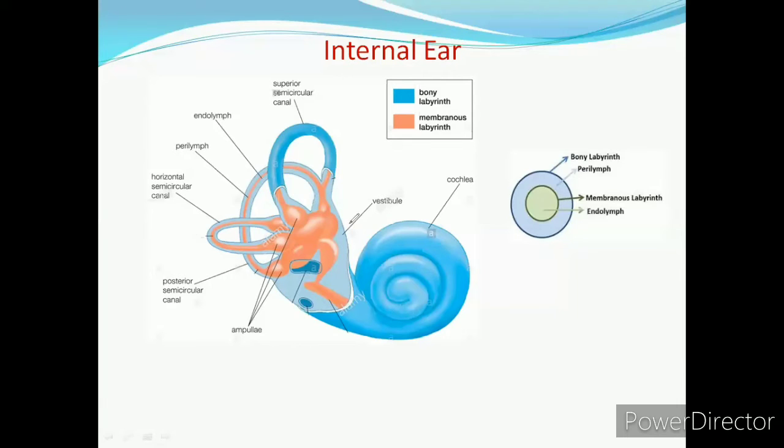Membranous labyrinth consists of three parts. That is semi-circular canal, vestibule and cochlea. First is the semi-circular canal. These are three in number which are arranged at right angle to each other in three different planes. This is the first one, second one and the third which is the horizontal. And other two are vertical.